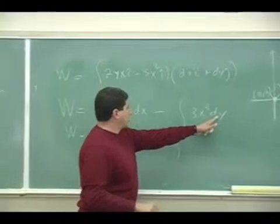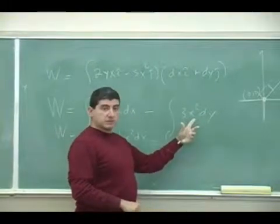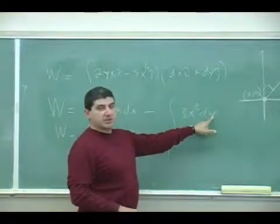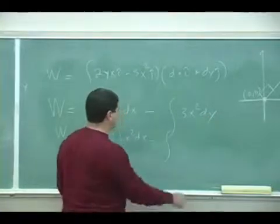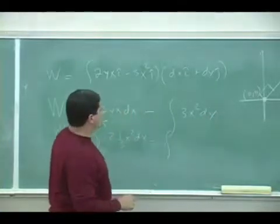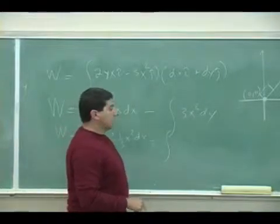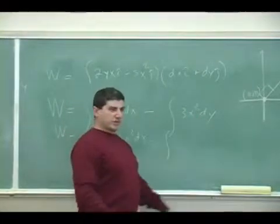Then over here, what you can do is you can either say X equals 3Y, or you can say DY is equal to 1 third DX. Either way, you should get the right answer. Which one is easier? X equals 3Y is easier? No, but then you have to square that.